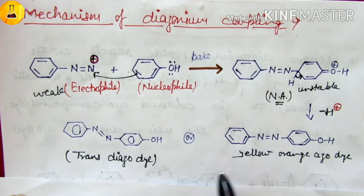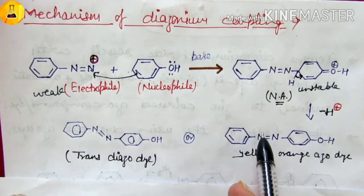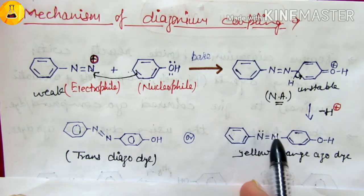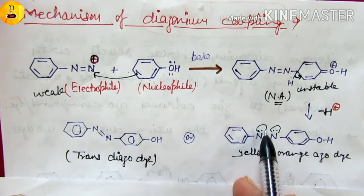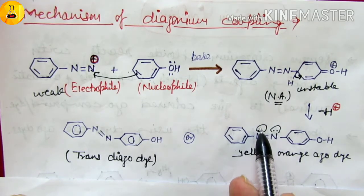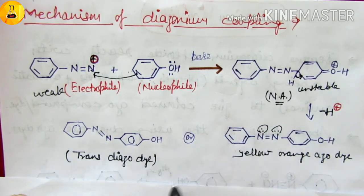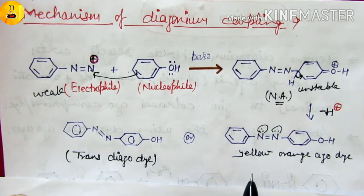Note that in books the structure is shown simply, but actually, since nitrogen has a lone pair, the azo compound shows geometrical isomerism. The cis form of azo dye is not stable; it exists in the trans form.